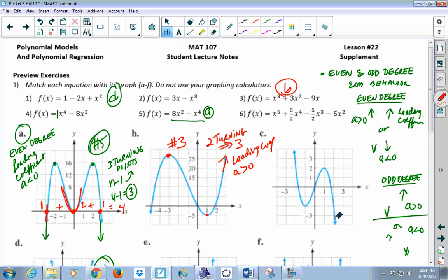Over here, C, we have another odd degree because the arms are going in different directions, if we look at the end behavior. And since the right arm is going down, we know that A is negative, and we have an odd degree, again supported by two turning points, and the only other odd degree here is number two with a leading coefficient of negative one. So this is number two, and this is graph C.